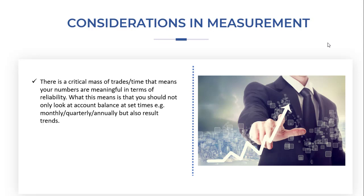We're going to start by looking at some overall considerations in measuring what we're doing. There is a need for a critical mass of trades over a period of time so that your numbers are meaningful in terms of what they're telling you and how reliable your trading is. You can't do it as a one-off — a one-off is simply a benchmark. You need to look at things like account balance at set times, for example monthly, quarterly, or annually.